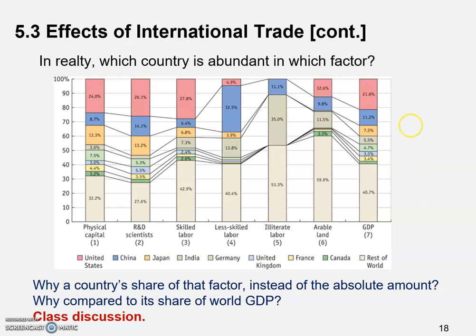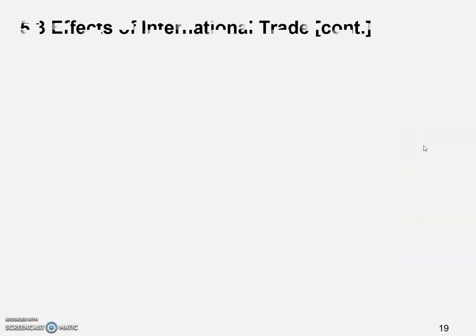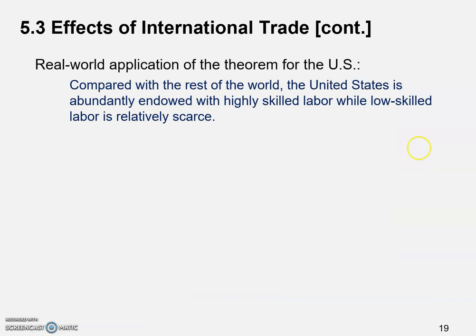The Stolper-Samuelson theorem is a very important finding in international economics. Let's talk about the real-world application, especially for the United States. Compared to the rest of the world, the U.S. is abundantly endowed with highly skilled labor, while low-skilled labor is relatively scarce. This is what we saw on the previous slide with that interesting figure.